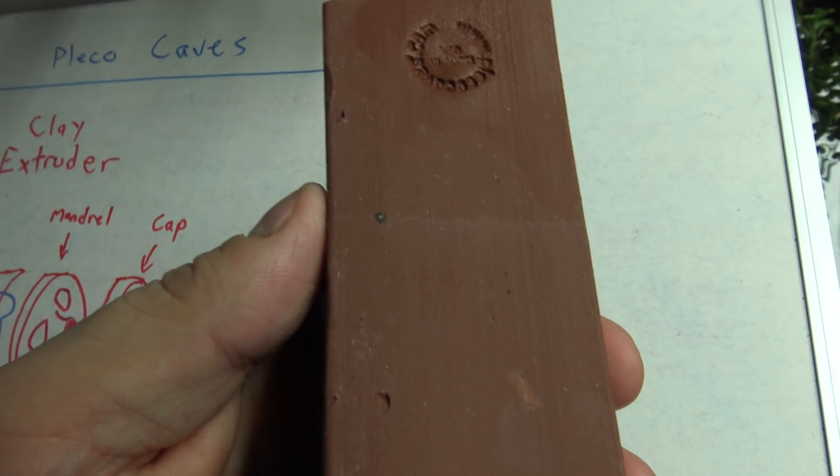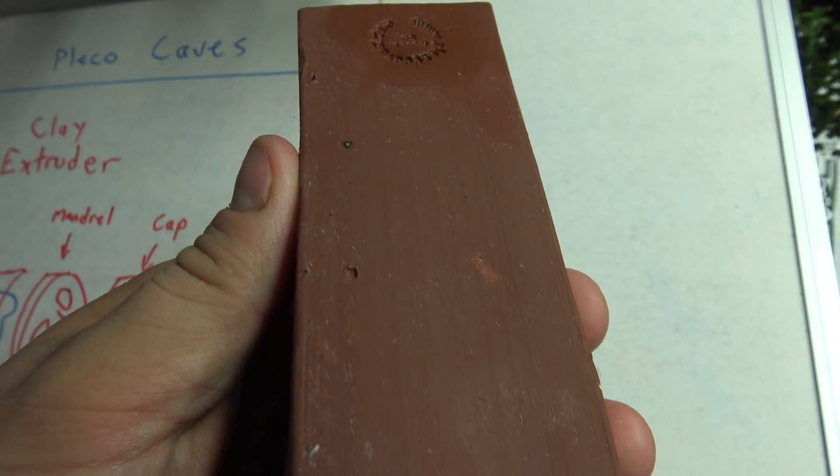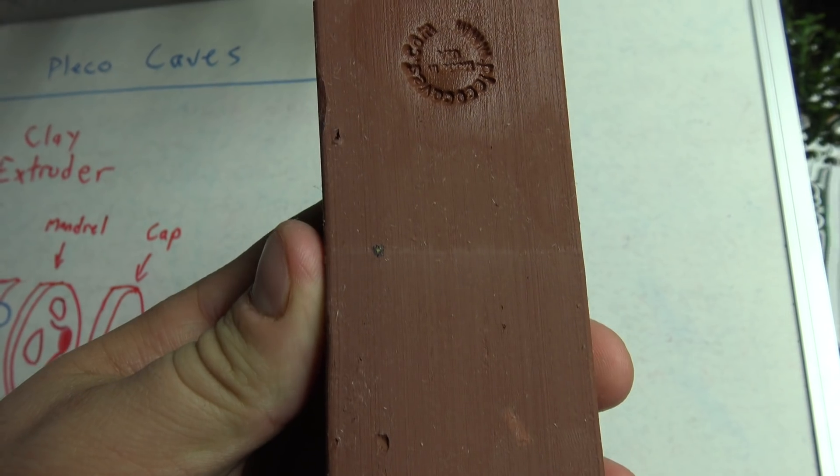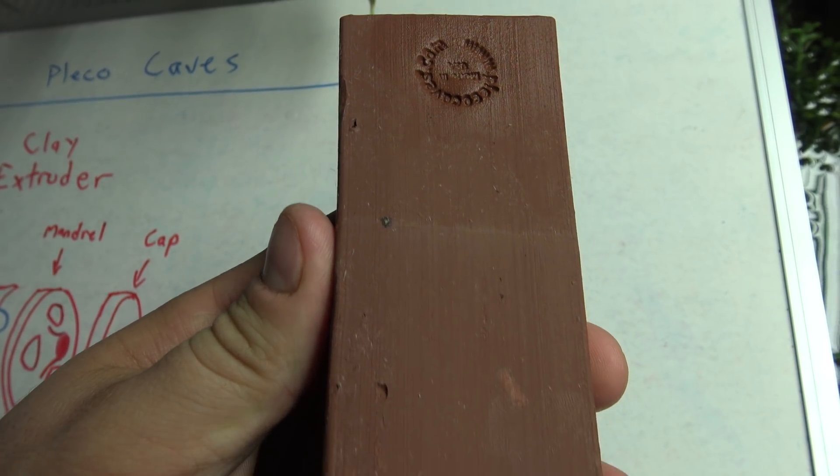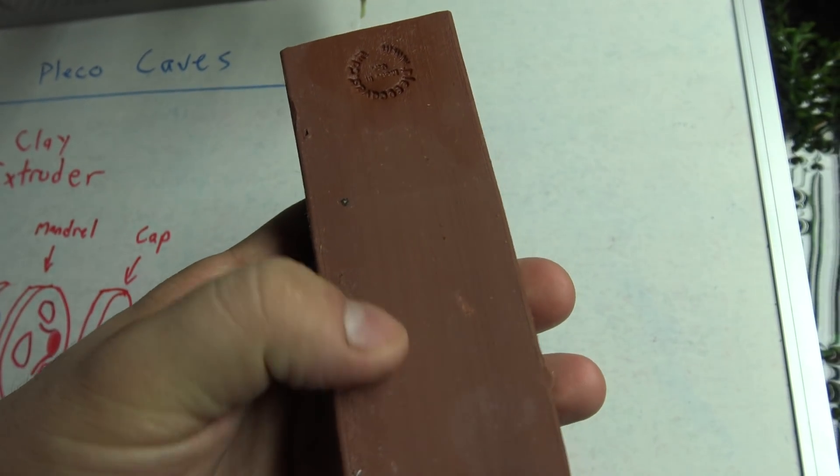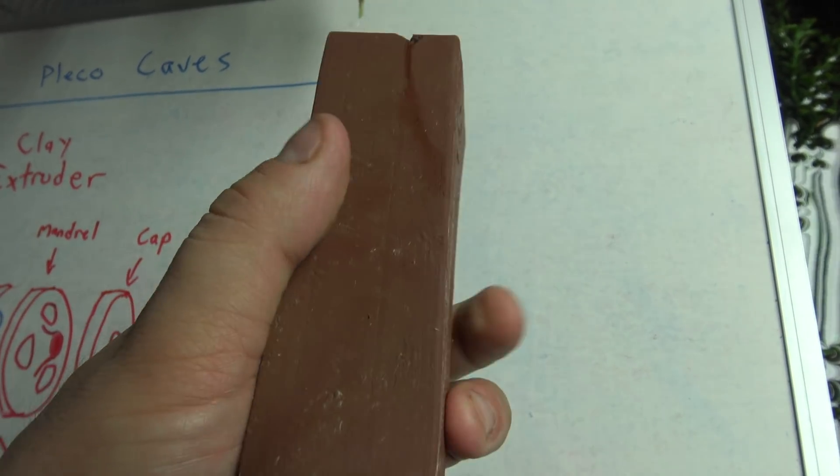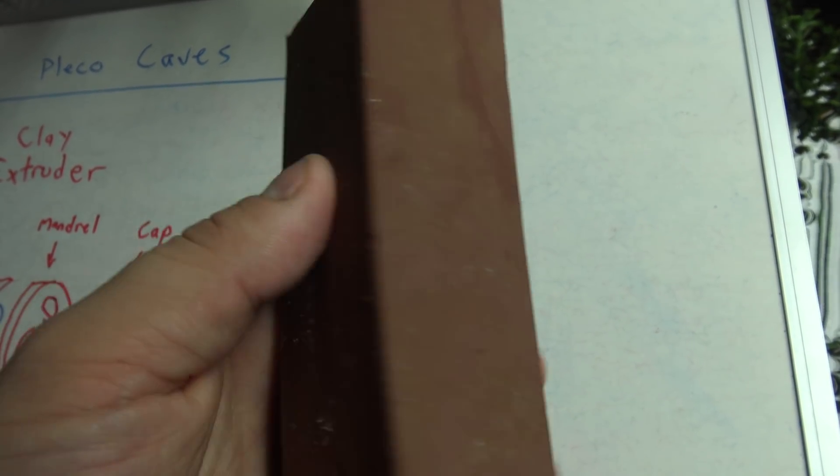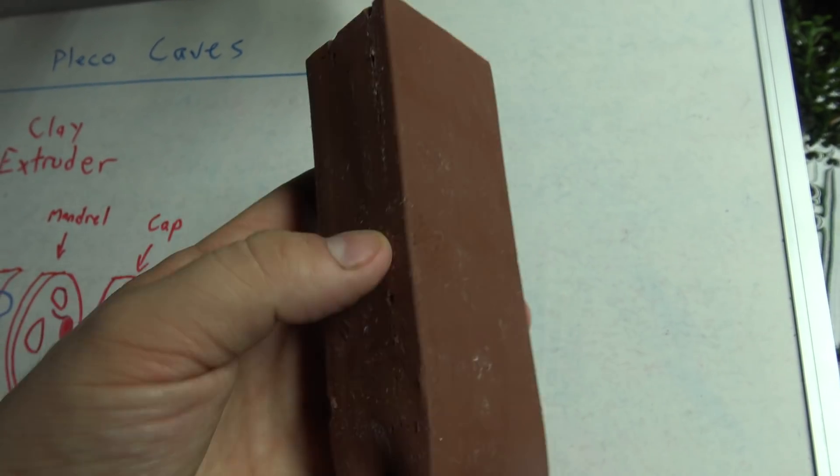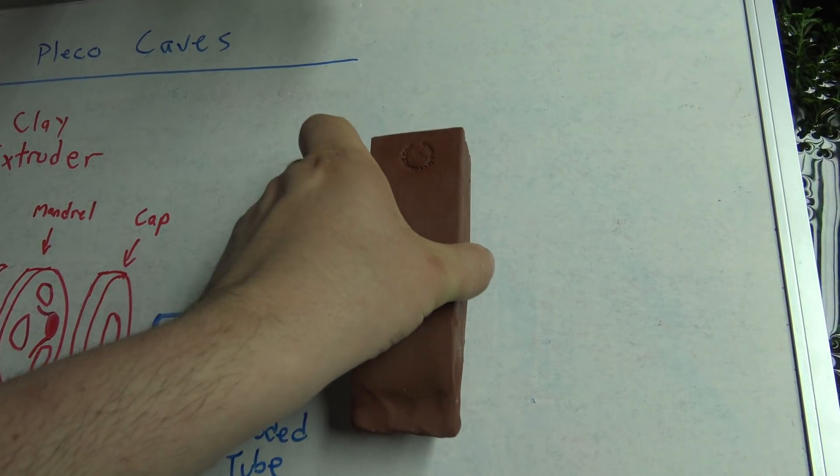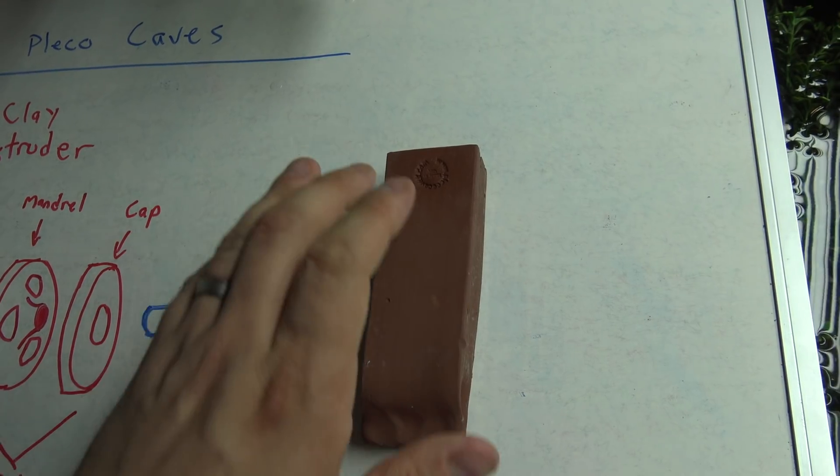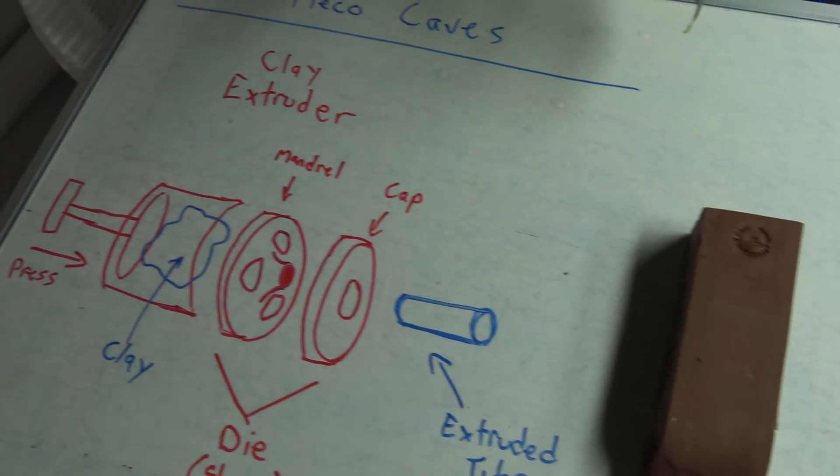The only other thing you'll notice is if you look at this real close, you'll see that there are striations that run the length of the Pleco Tube. Very clear striations that run the length of the Pleco Tube. And all of these things are telltale signs of how exactly it was constructed. And here's how.